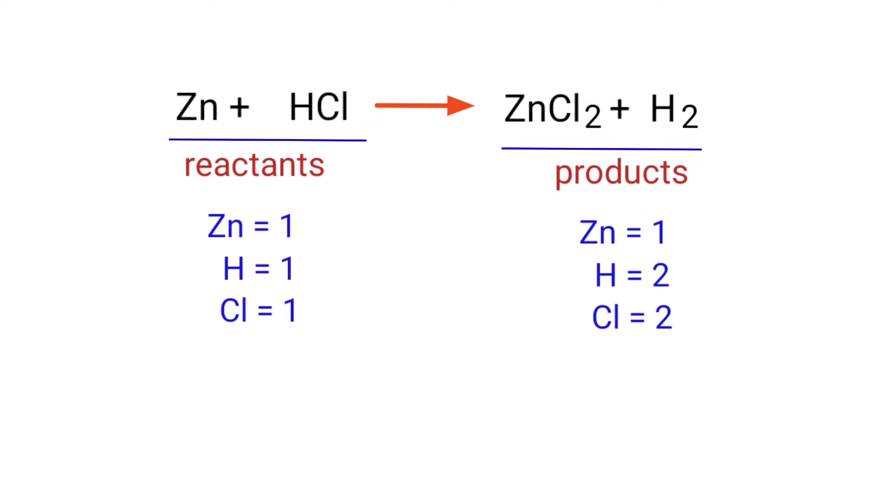On the products side, there are 1 Zinc atom, 2 Hydrogen atoms, and 2 Chlorine atoms present.